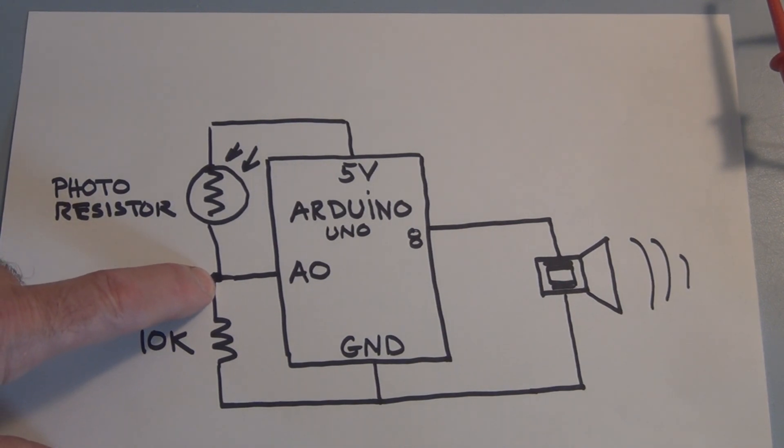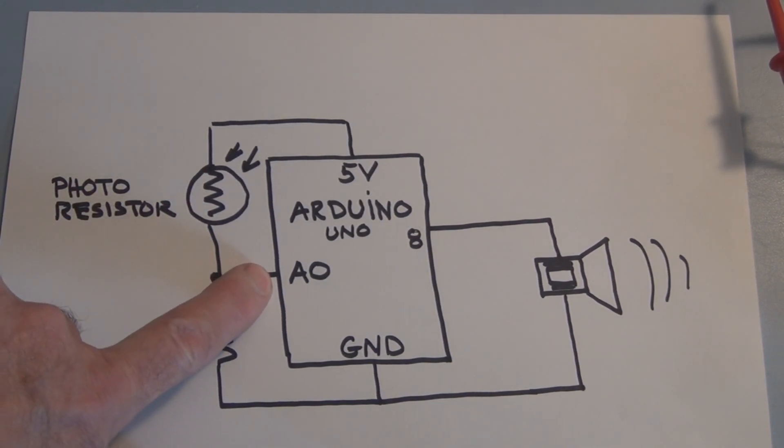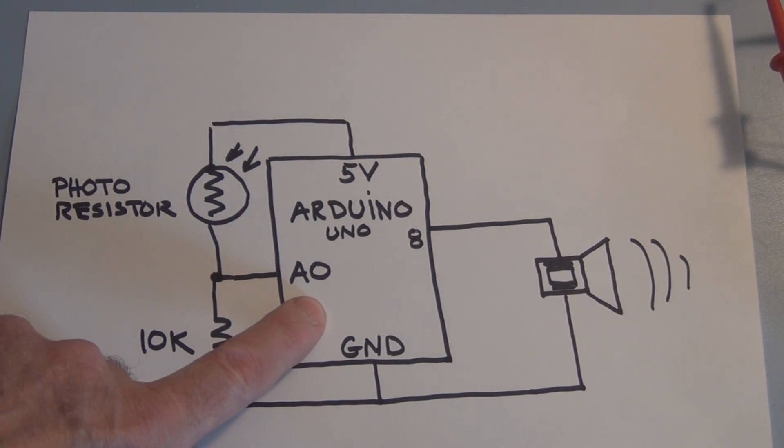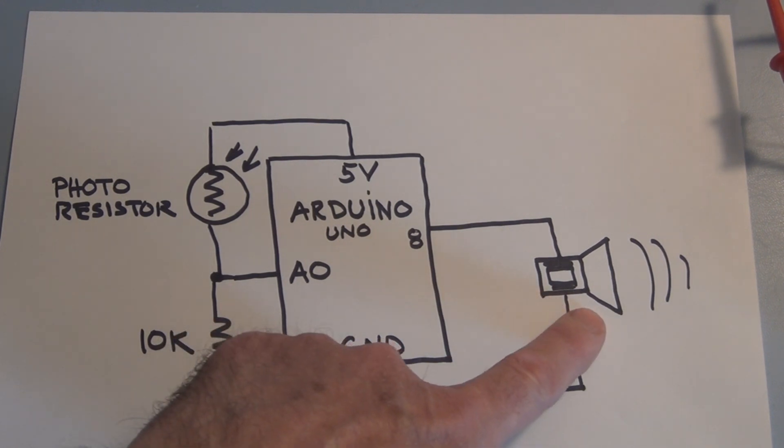At this junction here we're going to apply this analog voltage that is going to be proportional to light intensity on this photoresistor. We're going to apply it to A0 and then the onboard analog to digital converter is going to change that to a digital form that we can then use to apply to this piezo and produce sound.